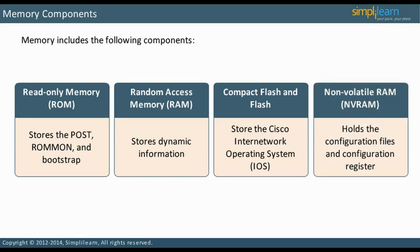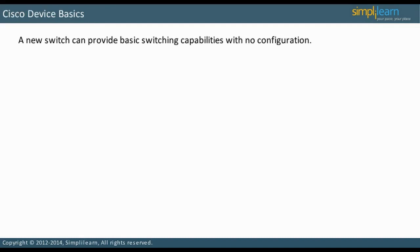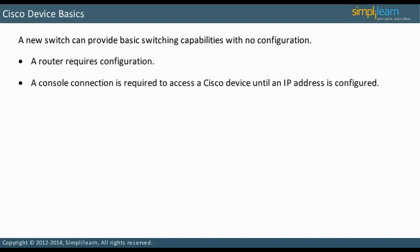In the next slide, let us discuss the basics of a Cisco device. A new switch can provide basic switching capabilities with no configuration. However, a router requires configuration. Until an IP address is configured, a console connection is required to access a Cisco device.